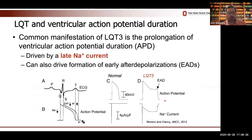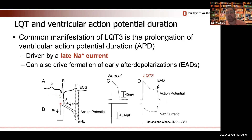To give the big picture: long QT is essentially a manifestation of a prolongation of the ventricular action potential duration. The QRS complex generally corresponds with the timing of activation of the ventricles, and the T wave corresponds with the repolarization of the ventricular action potential. A prolongation of ventricular action potential duration manifests as a prolongation of the QT interval, hence long QT syndrome.